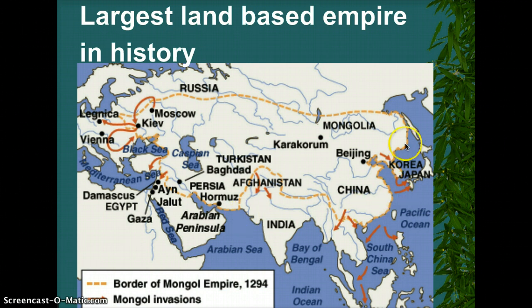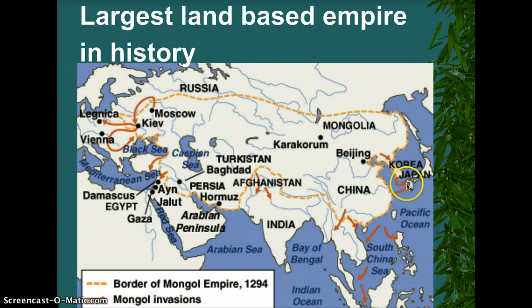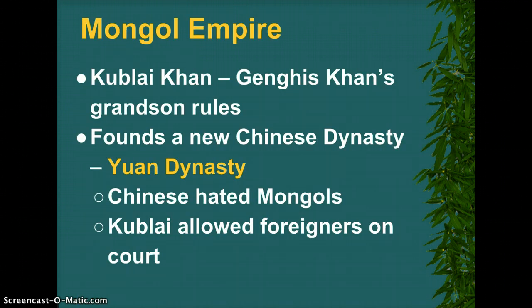You can see how large the empire is going to become under those two, shown by the yellow lines. You can see where they start invading — even into India, which eventually becomes the Mughals, and even into Japan and Korea. And there's Kublai Khan, the grandson of Genghis Khan. He's going to found the Yuan dynasty.